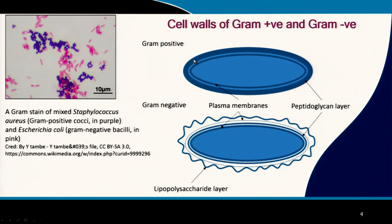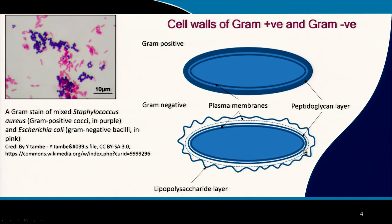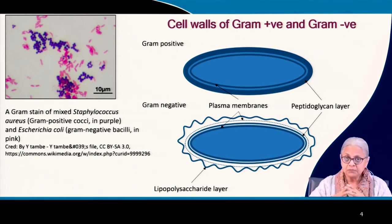In gram positive cells the structure is simple: a plasma membrane around the cytoplasm followed by an extremely thick peptidoglycan layer. In gram negative cells, there is a plasma membrane followed by three different layers: an inner plasma membrane, a very thin peptidoglycan layer, and an outer plasma membrane — so there are two plasma membranes, inner and outer. Outside all of this is a lipopolysaccharide layer, also called an exopolysaccharide layer (EPS or LPS).